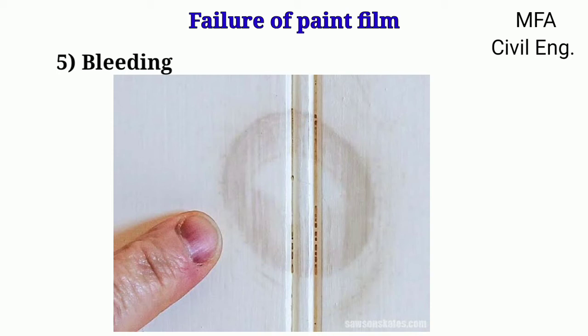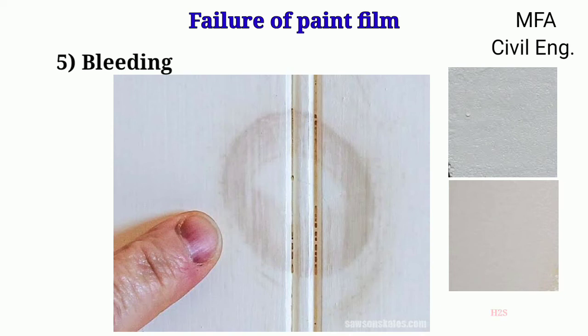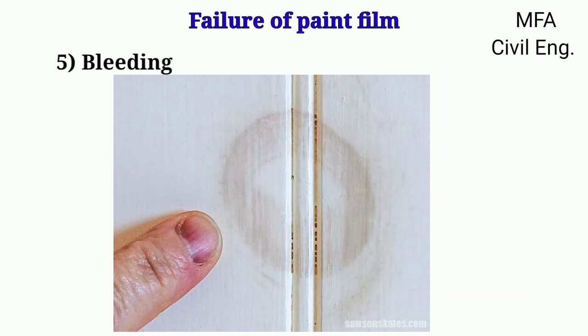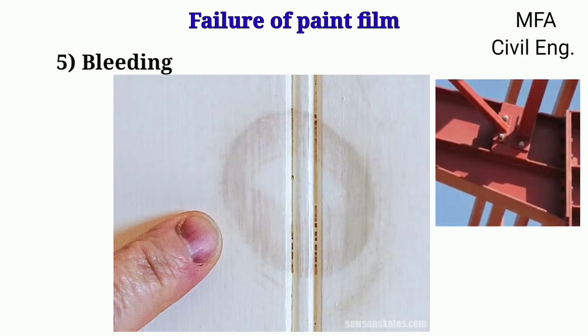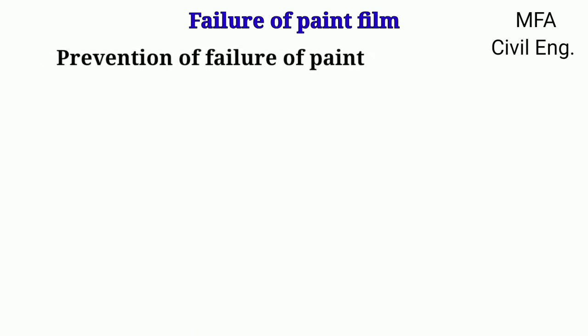The bleeding or color change of a paint film is due to the chemical effect of atmospheric gases on the paint when it is exposed for a longer period. For example, a white lead-containing paint film turns blackish when exposed to an atmosphere containing gases like hydrogen sulfide. Another example is a zinc oxide-containing paint film, which becomes yellow.